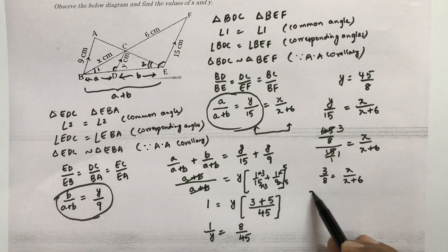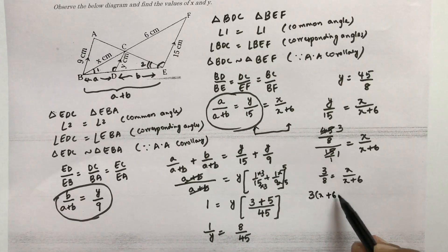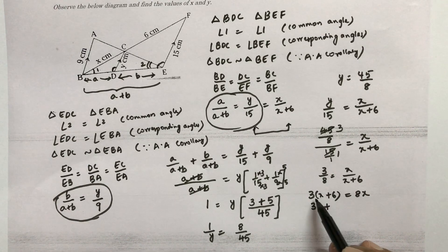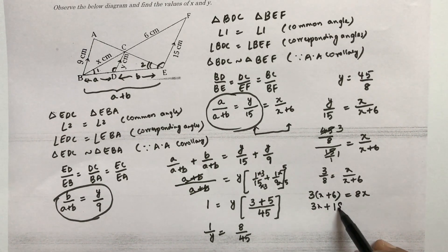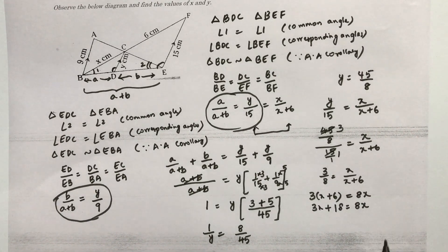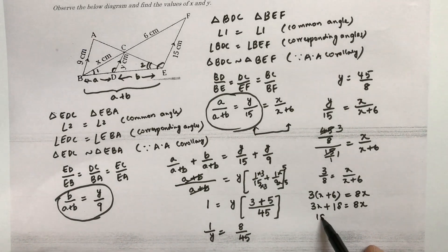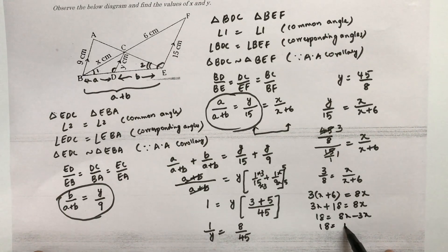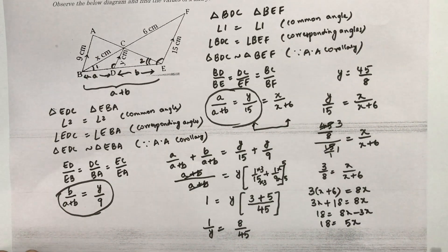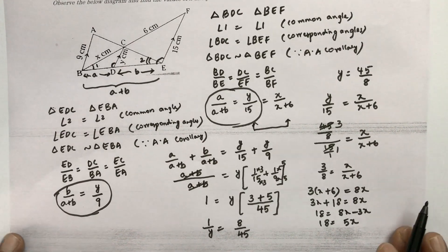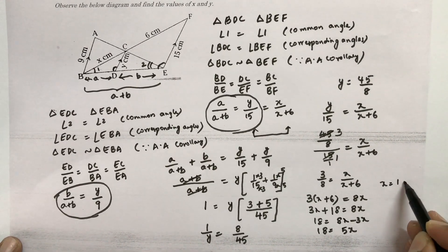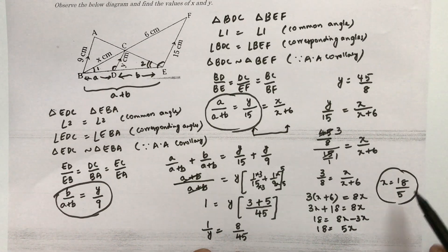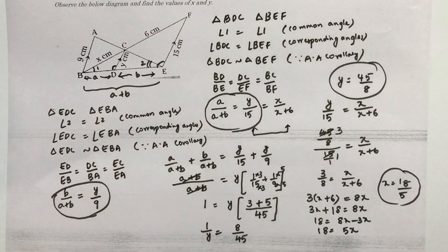If we will cross multiply, 3 into X plus 6 equals 8X. 3 into X is 3X, 3 into 6 is 18 equals 8X. So 18 equals 8X minus 3X. 18 equals 5X. So the value of X is 18 by 5. Therefore the value of X is 18 by 5, and the value of Y is 45 by 8.